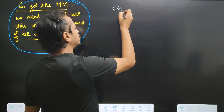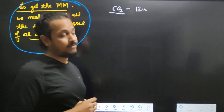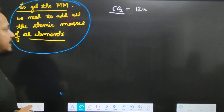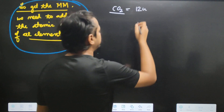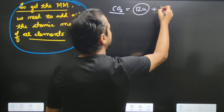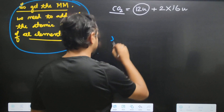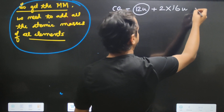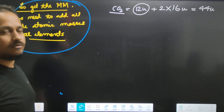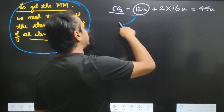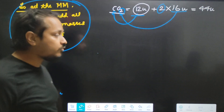For example, carbon dioxide: the molecular mass is the carbon atomic mass plus oxygen. That gives us carbon plus 2 into 16u. This is the molecular mass of carbon dioxide.